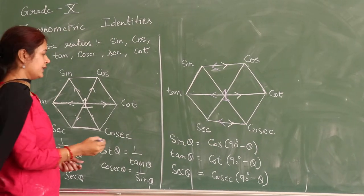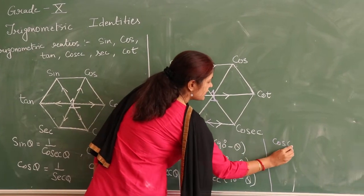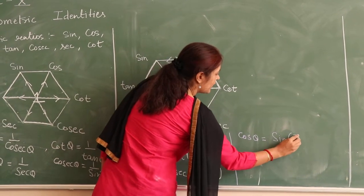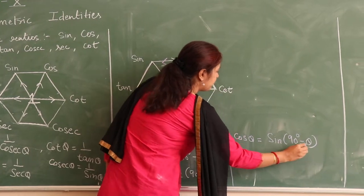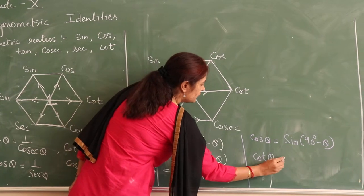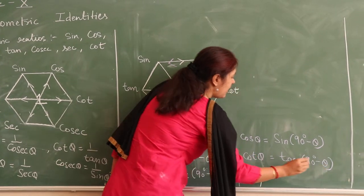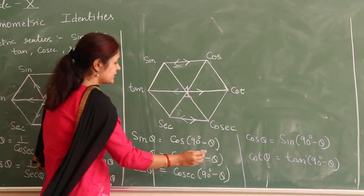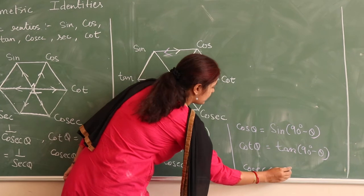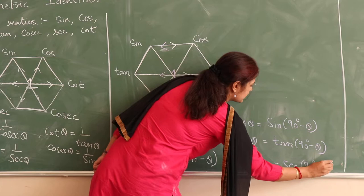So we get another set of identities. That is cos theta is equal to sin 90 degrees minus theta. Then cot theta is equal to tan 90 degrees minus theta. And the last one is cosec theta is equal to sec 90 degrees minus theta.